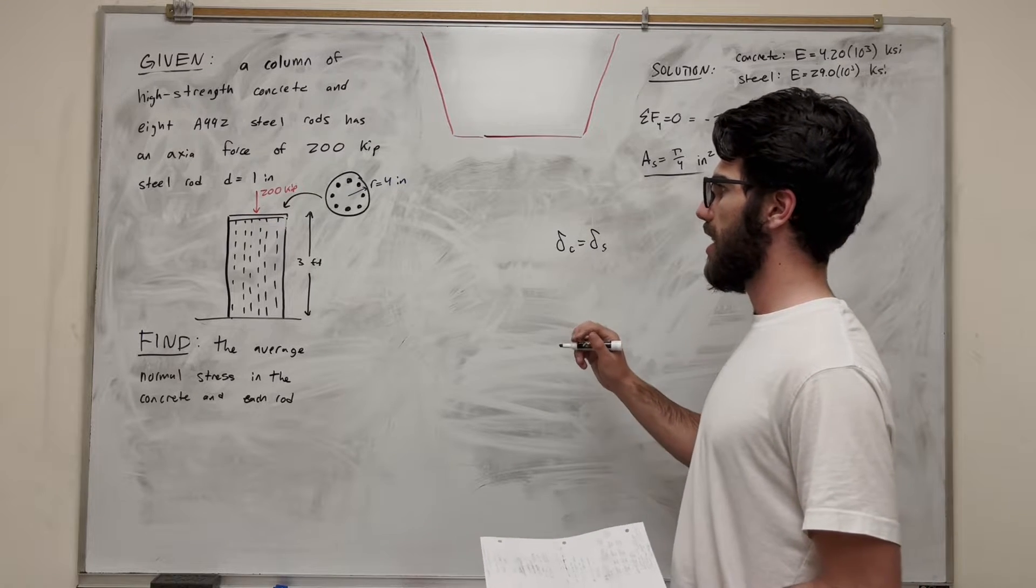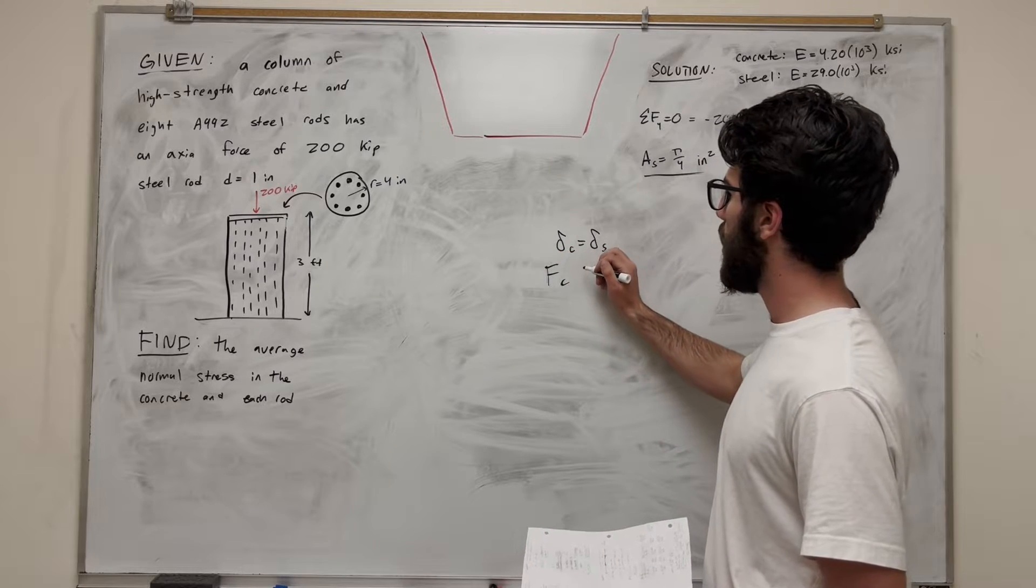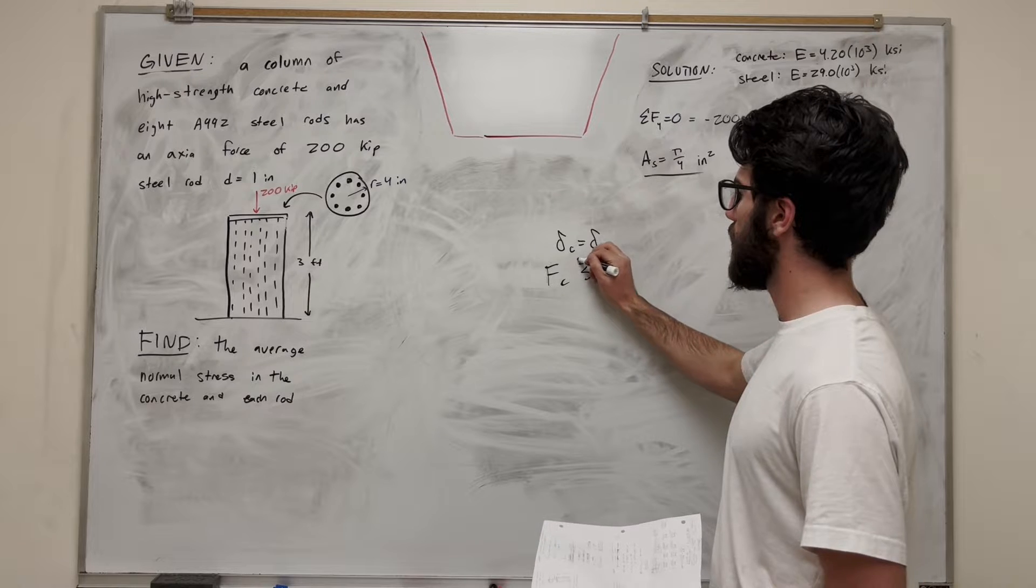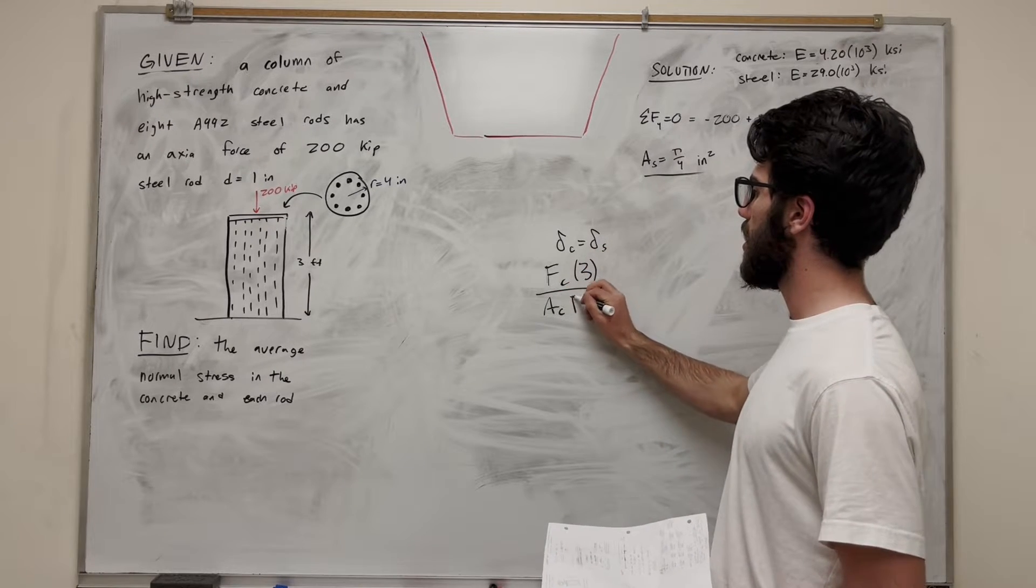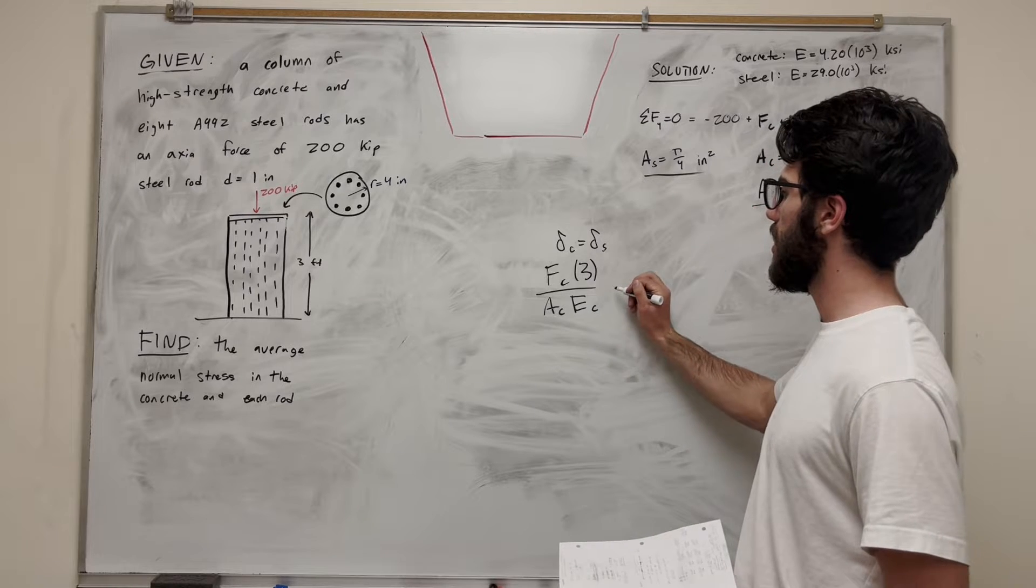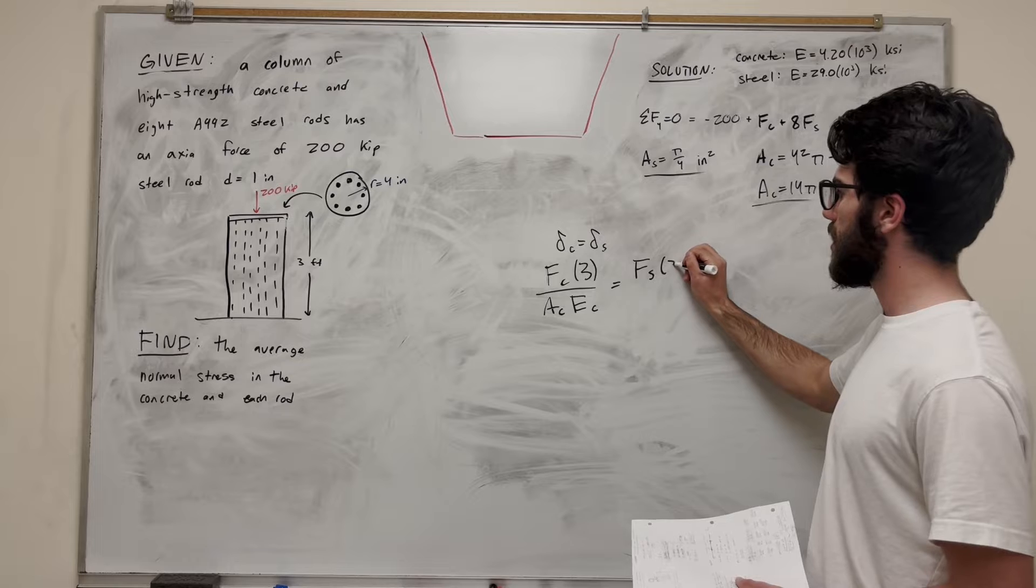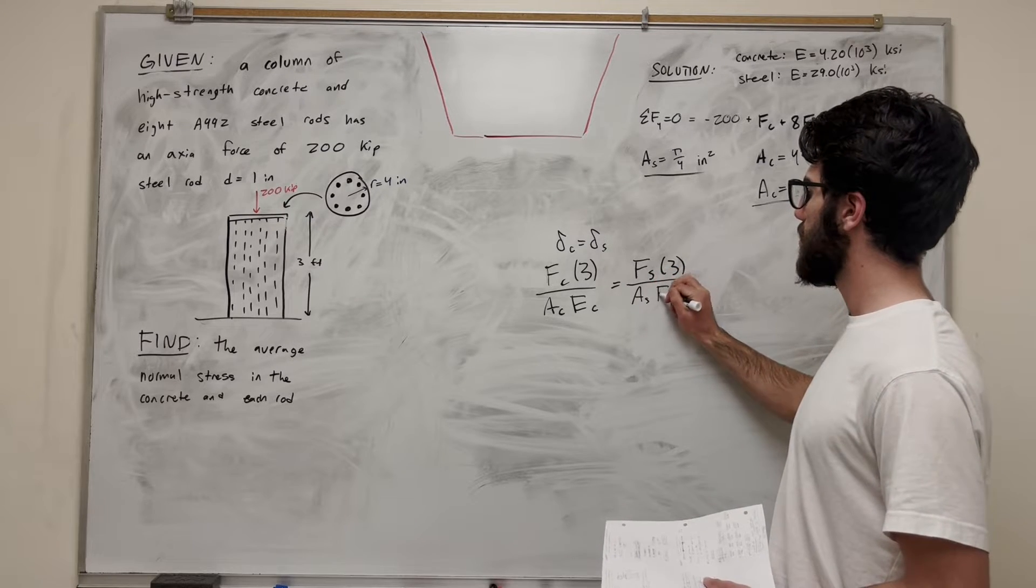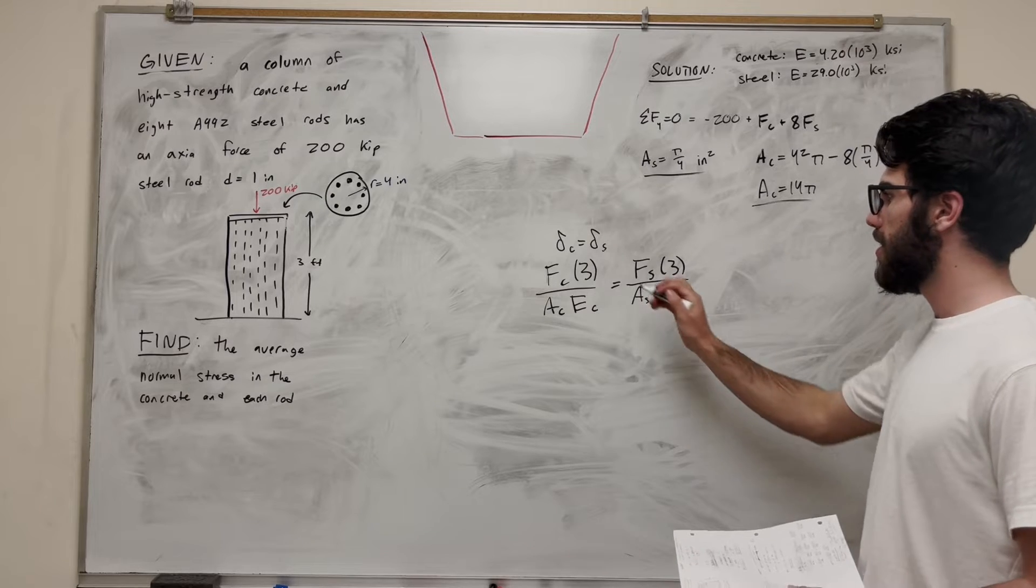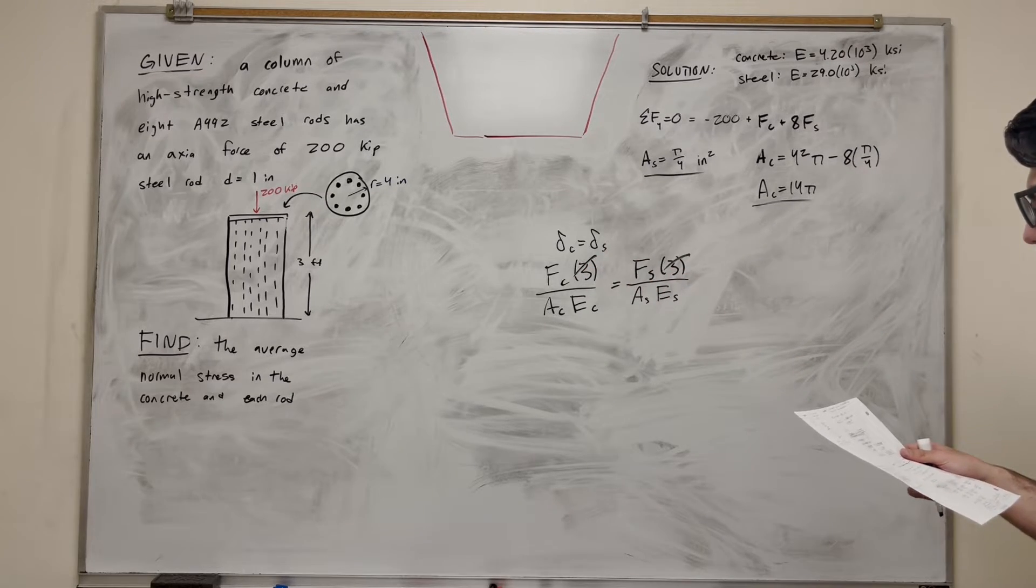So let's write out what they are. So PL over AE. So this is the force of concrete times length of concrete, which is three feet, of course, over the area of the concrete, over the modulus of elasticity of the concrete. And this is going to be equal to the force of the steel times the length of the steel, which is three, area of the steel, upon the elasticity of the steel. So right away these threes are going to cancel, pretty easy to tell. And then we just have to plug in everything else we know. So let's do that.